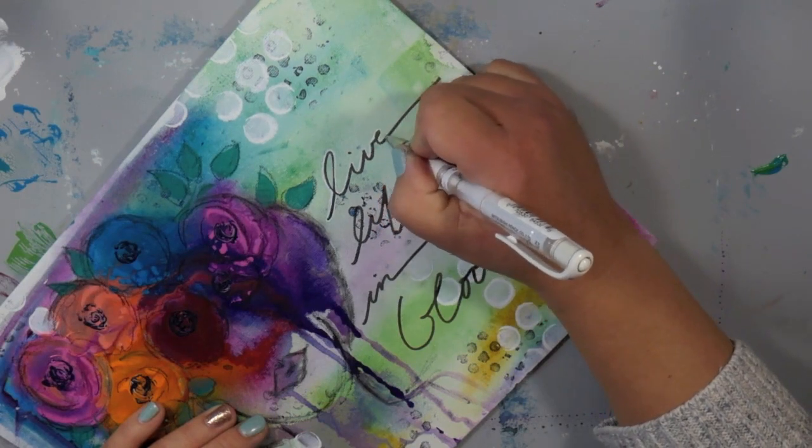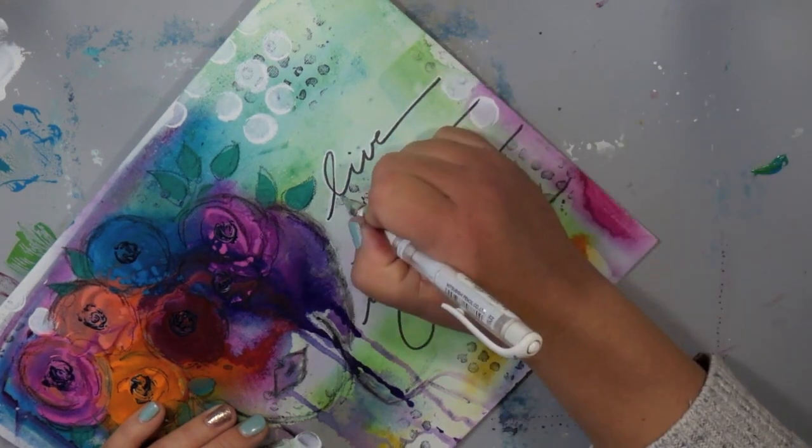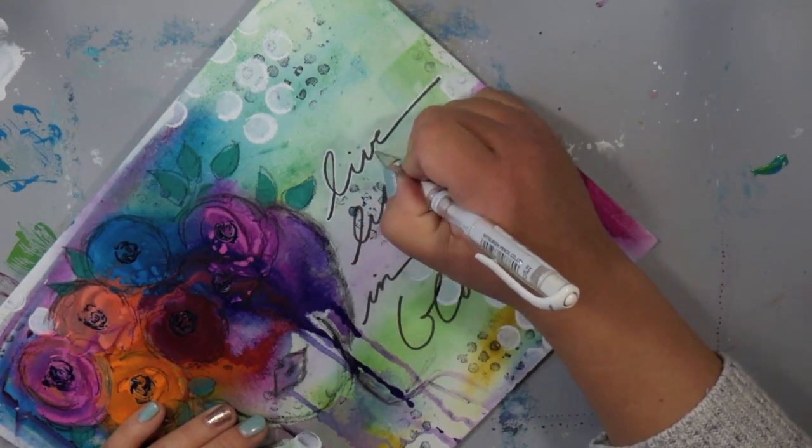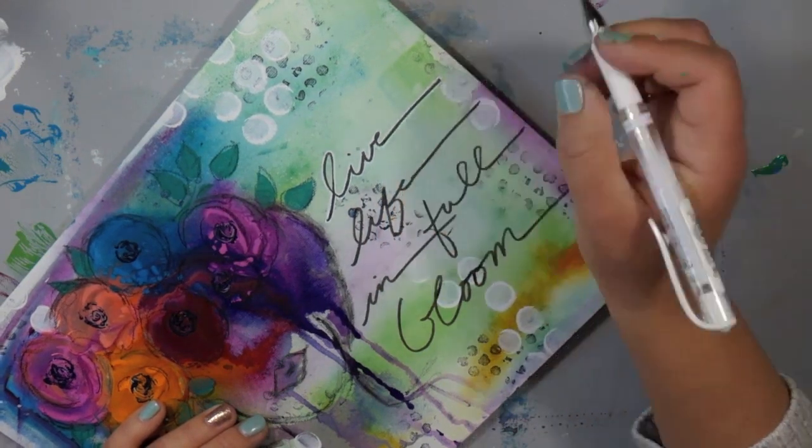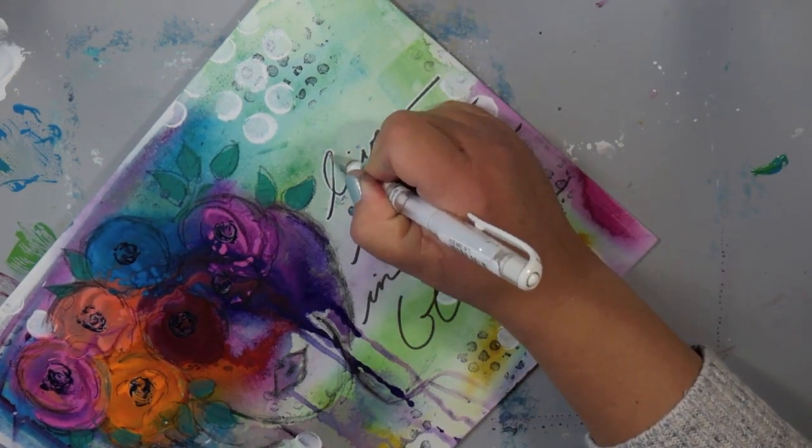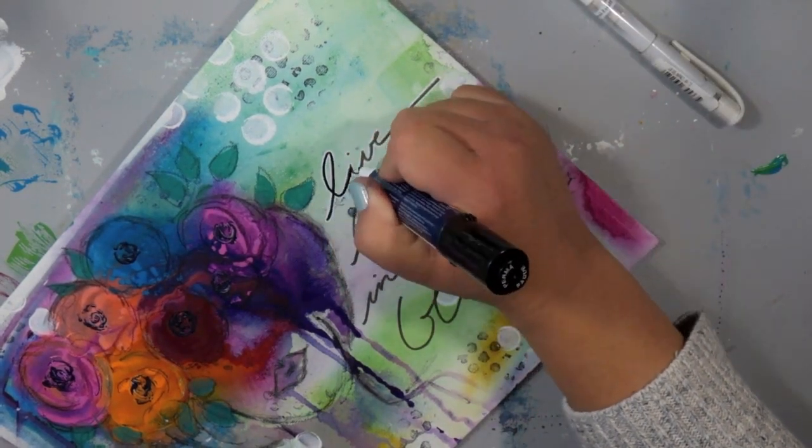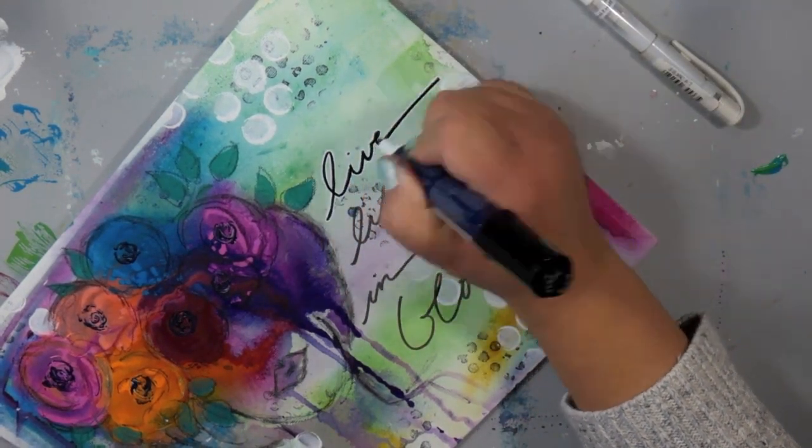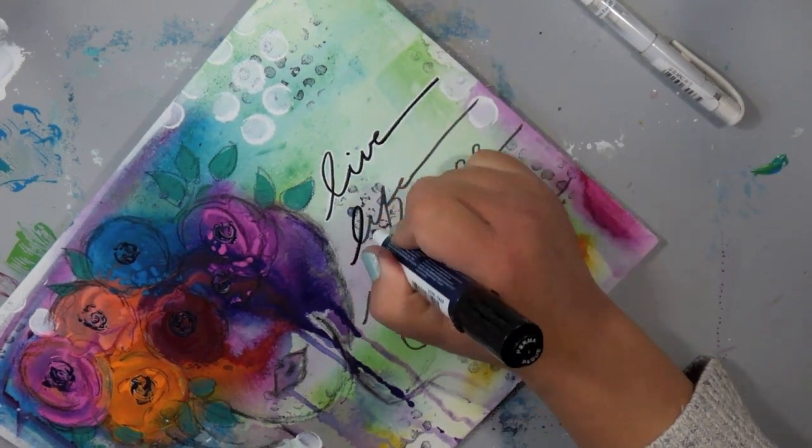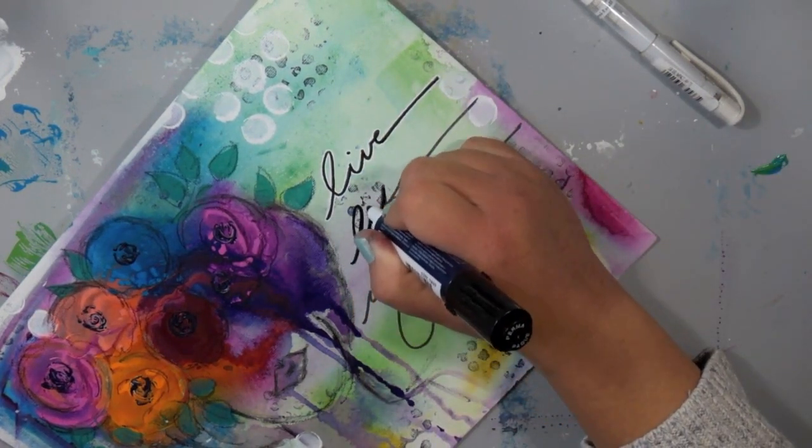But I wanted to darken up that black first so I'm going to bring in another paint marker that is a thicker opaque type and I'm going to outline all of that black writing and then I'll go back in and highlight all of my writing with a white gel pen.